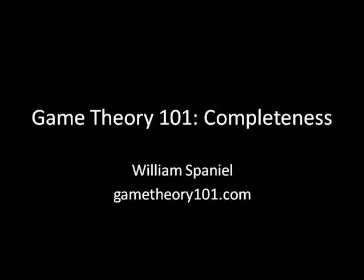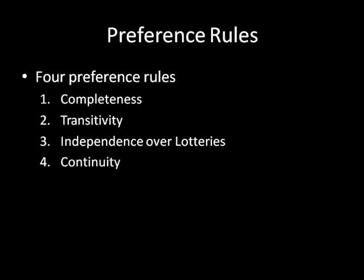Hi, I'm William Spaniel. Let's learn some game theory. Today we're going to talk about the completeness preference axiom. We're going over the preference rules that we need for game theoretical models to operate properly. These first two — completeness and transitivity — are how we define rationality, and we'll be tackling the first half of that today.